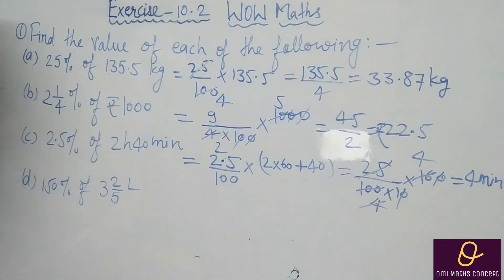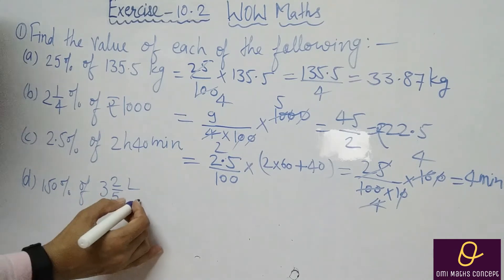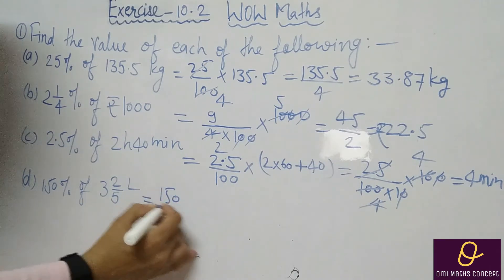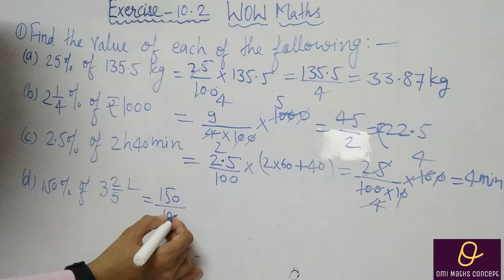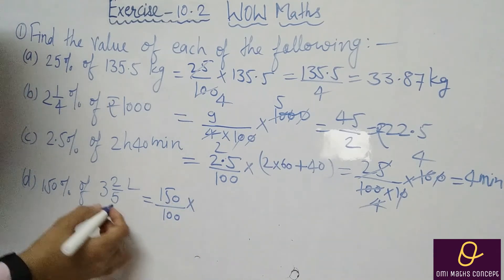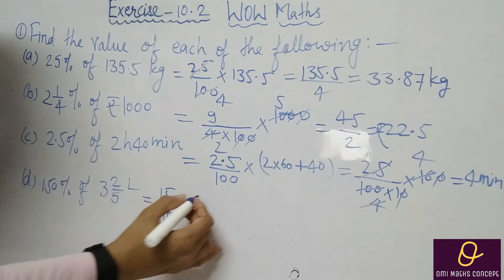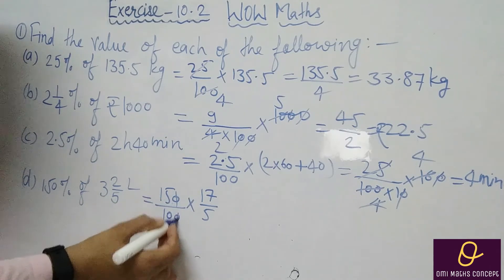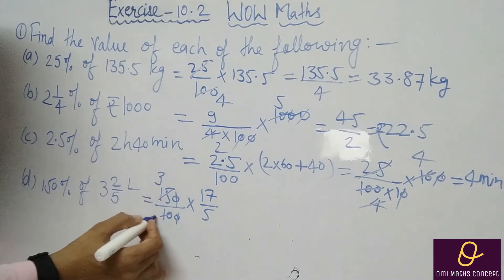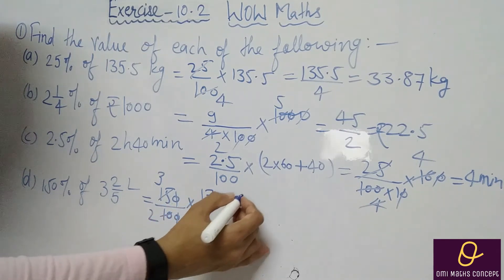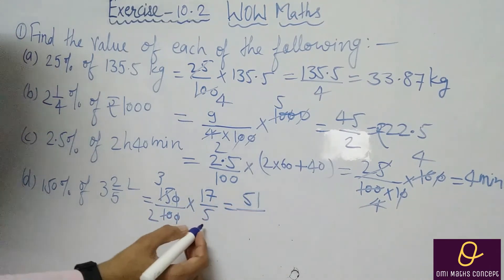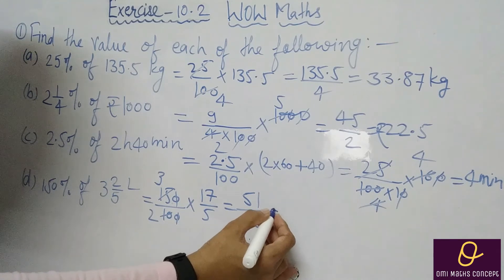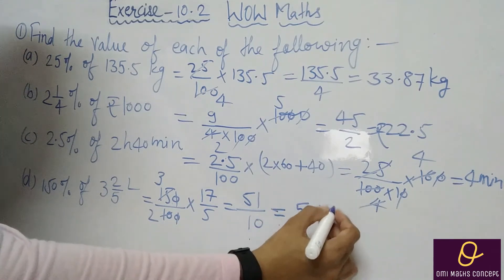Part D: 150% of 3⅖ litres. First we remove the percentage by dividing by 100, then convert the mixed fraction: 5×3 is 15 plus 2 is 17, so 17/5. After cancellation, 17 × 3 = 51, divided by 5. We put a decimal after 1 digit, giving 10.2 — wait, the answer is 5.1 litres.